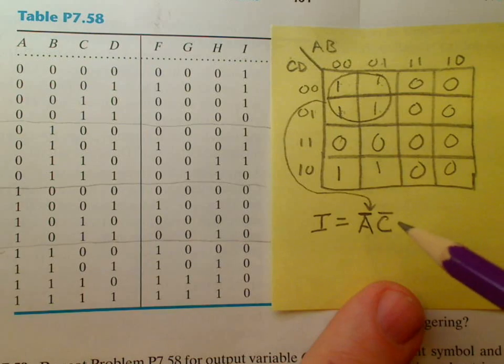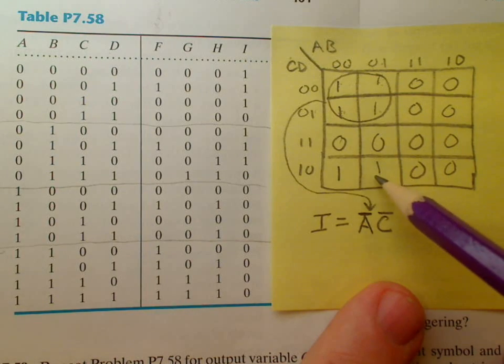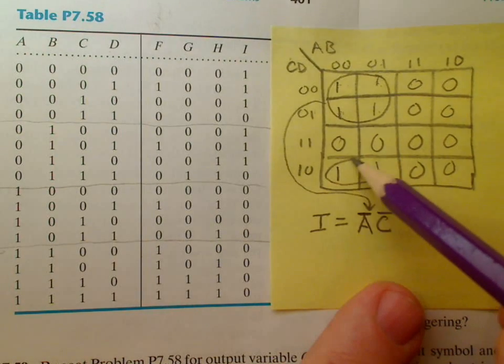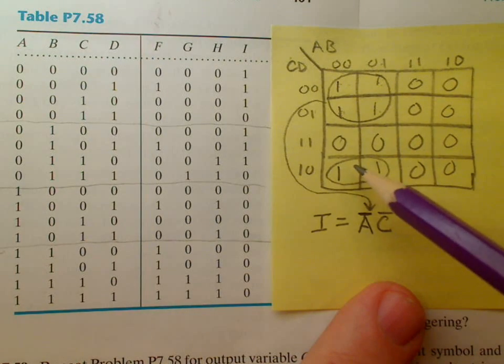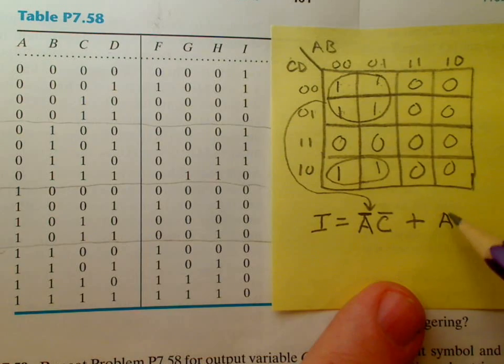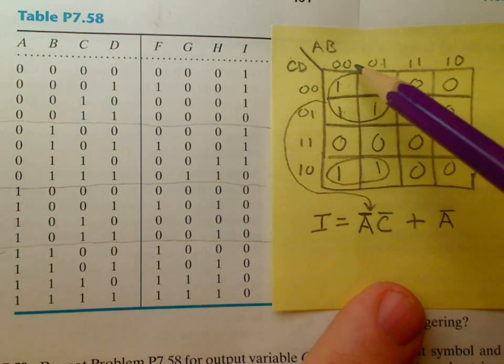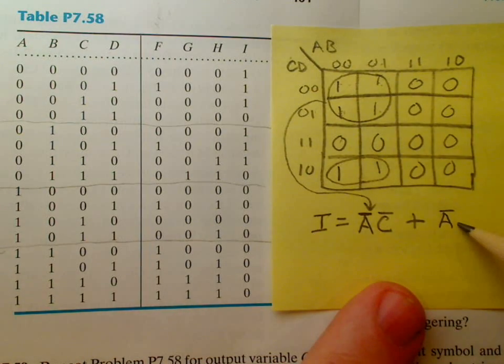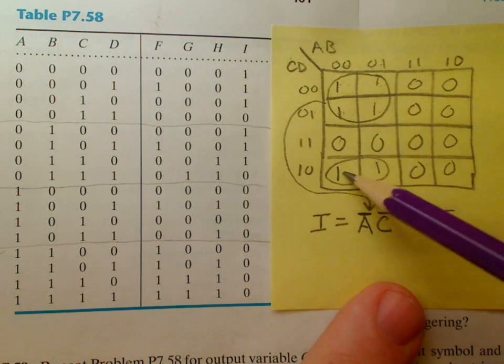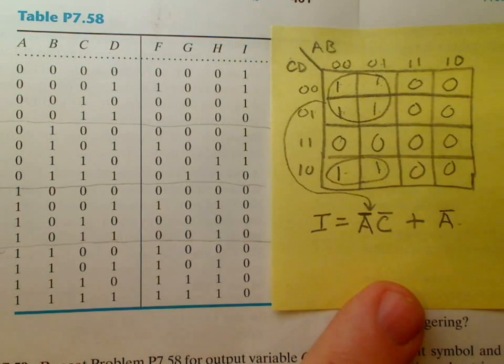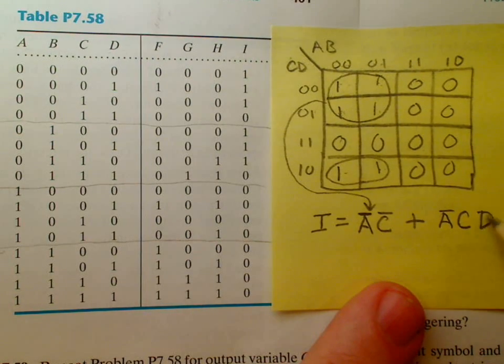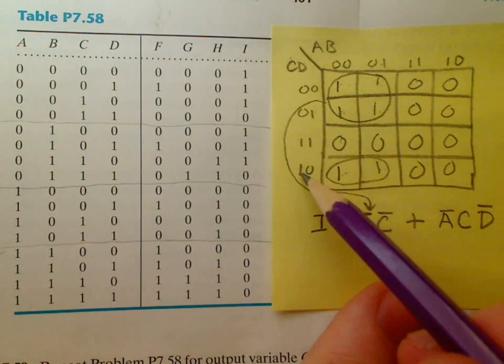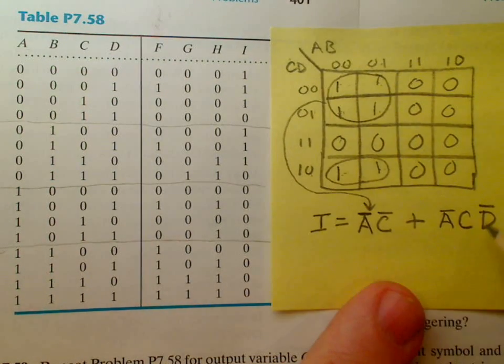Now let me first do this next part here incorrectly, and then I'll show you the right way. If I just did those two right there, I get a term that would correspond to naught A. I've noticed that B is not there. It doesn't appear in this term because it changes as I go between those two cells. Also I notice that C and D do remain the same. C remains high, D remains low.